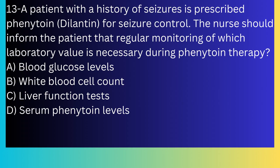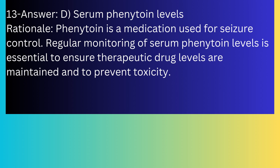Question number thirteen: A patient with a history of seizures is prescribed phenytoin (Dilantin) for seizure control. The nurse should inform the patient that regular monitoring of which laboratory value is necessary? A) Blood glucose level, B) White blood cell count, C) Liver function tests, D) Serum phenytoin level. The answer is D, serum phenytoin level. Regular monitoring of serum phenytoin levels is essential to ensure therapeutic drug levels are maintained and to prevent toxicity.